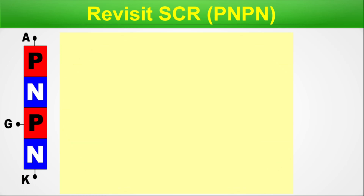On the left side, we have the PNPN structure with the anode, gate, and cathode — A, G, K — of the SCR. On the right-hand side, we have the BJT equivalent circuit of the PNPN structure, where Q1 and Q2 are the two BJTs: one is PNP, the other is NPN. The points A, G, and K in the equivalent circuit correspond to the same points in the SCR symbol on the left. So on the left we have a symbolic representation of the SCR, and on the right the BJT equivalent model.